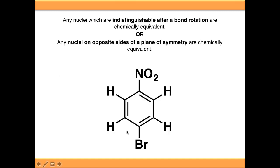This molecule here provides an example of both methods. There is a plane of symmetry down the middle. Anything on this side of the molecule must be in the same chemical environment as anything on that side. This hydrogen is ortho to the nitro group, whereas this hydrogen is ortho to the bromine, so these are not chemically equivalent.